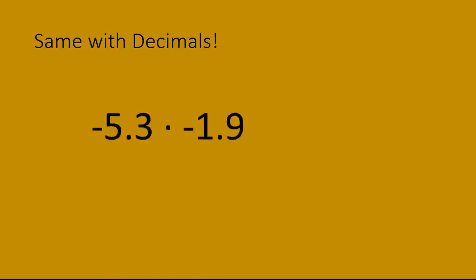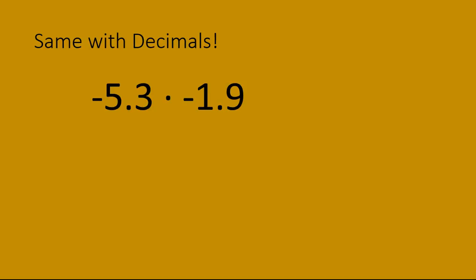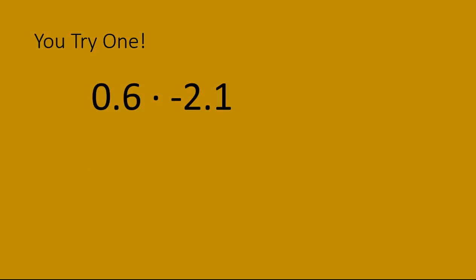The same rules apply with decimals. If you have negative 5.3 times negative 1.9, you get positive 10.07. The rules are exactly the same with decimals — negative times a negative gives you a positive. Now try a decimal: go ahead and multiply 0.6 times negative 2.1. Did you get negative 1.26? That is the correct answer.